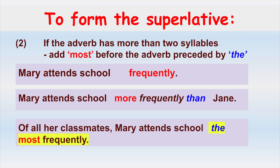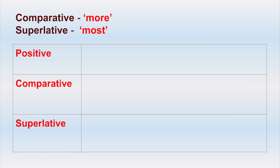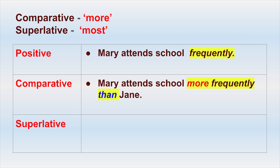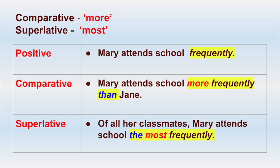'Of all her classmates' implies there are more than two classmates. Let's look at this chart showing the differences using MORE and MOST. In the positive form: Mary attends school frequently. In the comparative form: Mary attends school more frequently than Jane. And in the superlative form: of all her classmates, Mary attends school the most frequently.